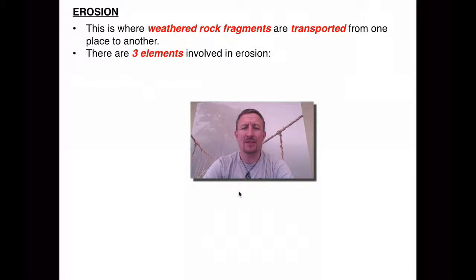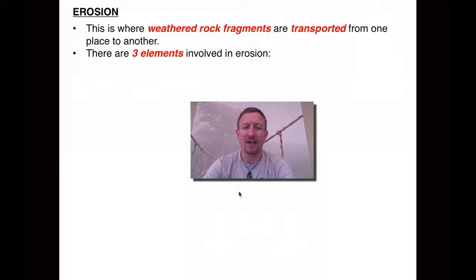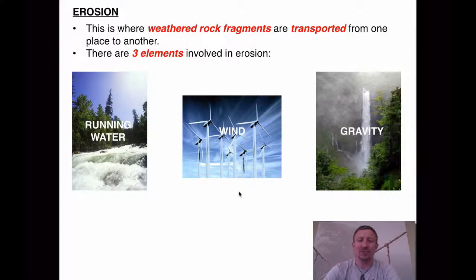As we learnt in the last unit, rocks can be broken down by a process of weathering, and by breaking them down they can be converted into boulders, pebbles, even gravel. But once they've been weathered and broken down, they then need to be transported from one place to another. This process of transportation is called erosion, and there are three main elements which make up this process: running water, wind, and gravity.